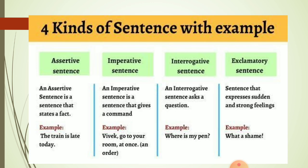Let's understand each type with examples. An assertive (declarative) sentence states a fact — for example, 'The train is late today.' An imperative sentence gives a command or order — for example, 'Vivek, go to your room at once.' Someone is ordering Vivek, so it is an imperative sentence.